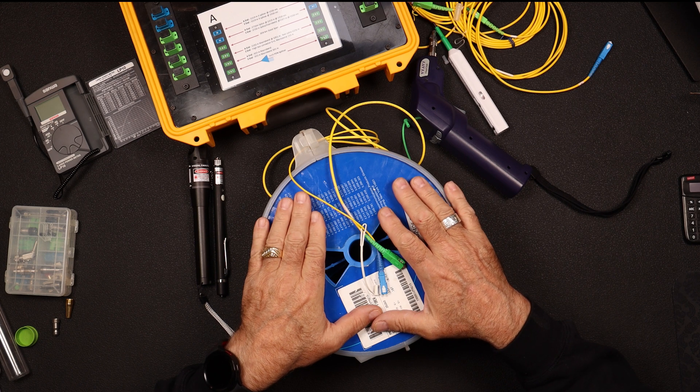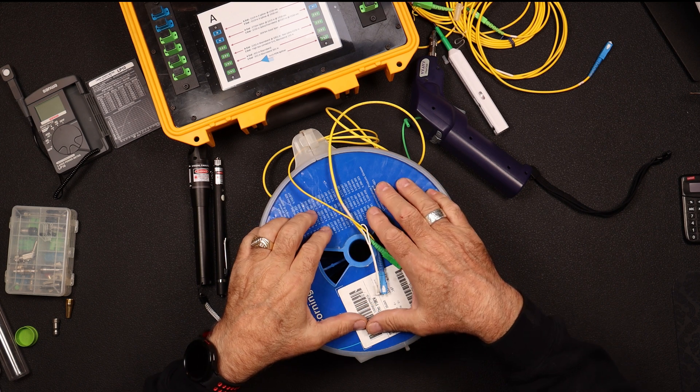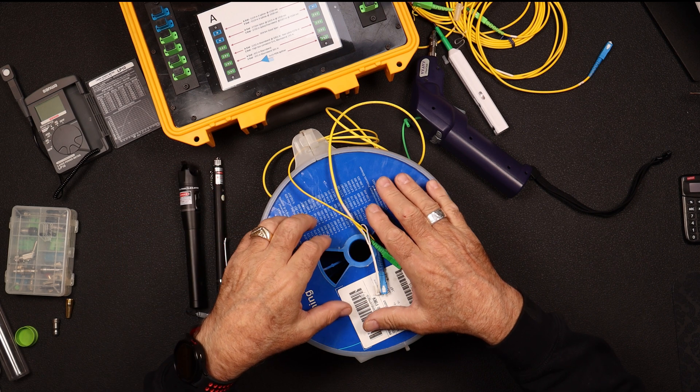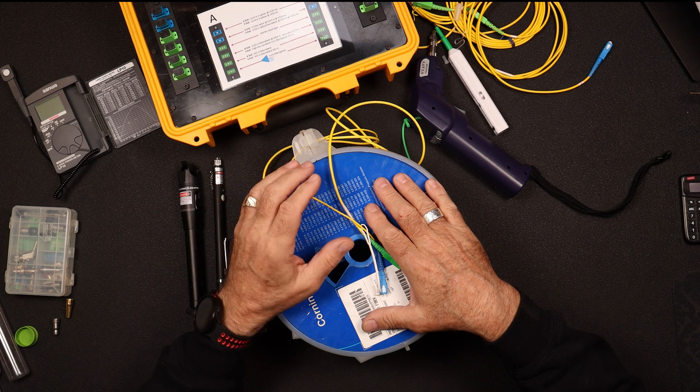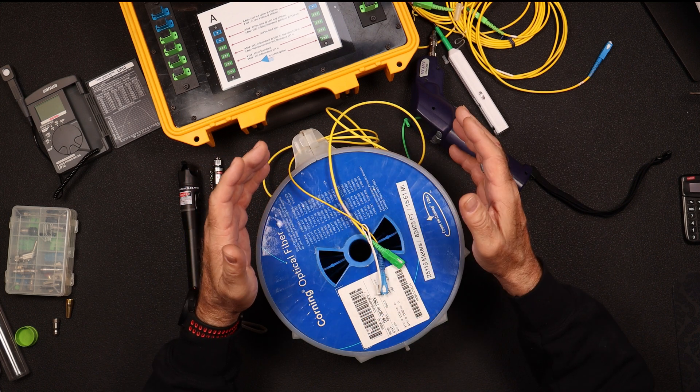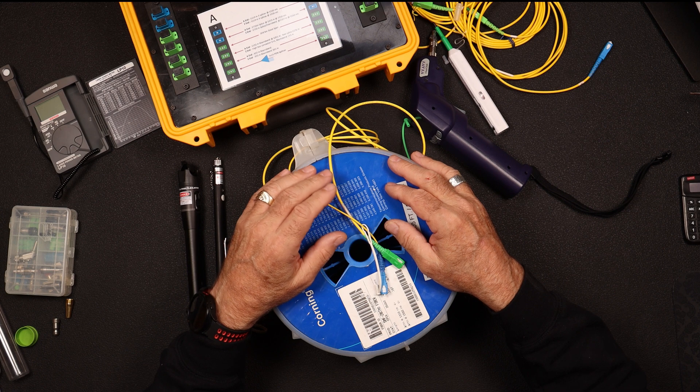So this is a continuous piece of fiber for 25 kilometers, which means that the loss that you would experience in this and the loss that these guys are going to be encountering is far less than what we'd see in an actual network with multiple connectors, patch panels, splices, macro bends, micro bends, all the fun things that go with fiber optics.